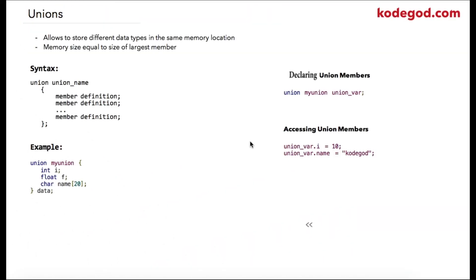In this lecture we are going to learn about unions. Unions allow you to store different data types in the same memory location. In case of unions, memory size equals the size of the largest member.